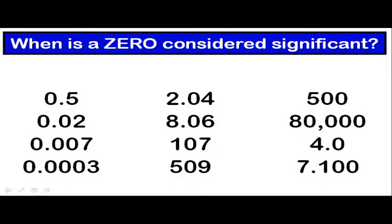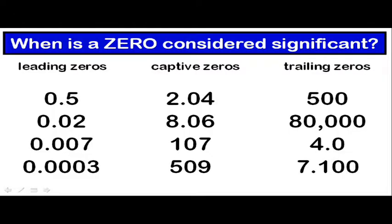Here are three examples of where zeros may happen to fall in a given measurement. They can occur at the beginning, leading zeros. The zeros can occur in the middle of a number, captive zeros, and the zeros can occur at the end, trailing zeros.